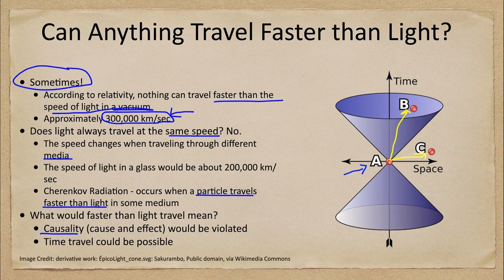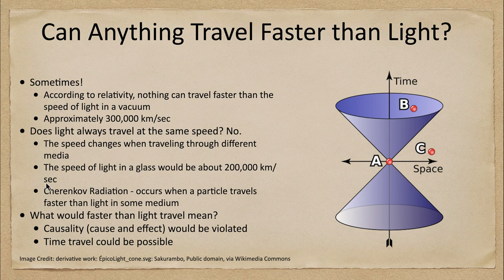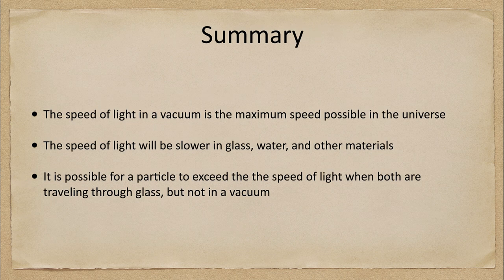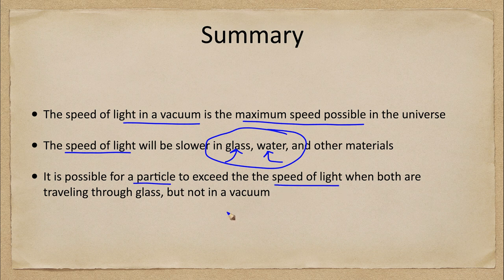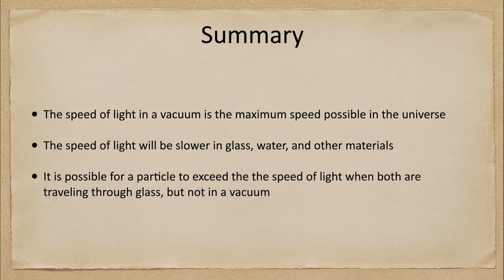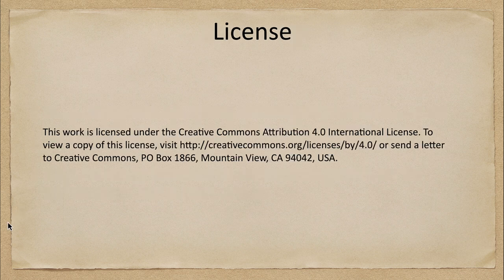Let's finish up with our summary. The speed of light in a vacuum — about 300,000 kilometers per second — is the maximum speed possible in the universe. The speed of light will be slower if you're traveling through materials like glass or water, and within these materials it is possible for a particle to exceed the speed of light in that medium, but not exceed the speed of light in a vacuum. That concludes this lecture. We'll be back next week for another misconception in astronomy — until then, have a great day everyone and I will see you in class.